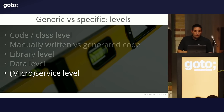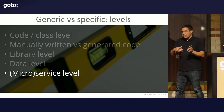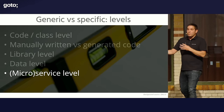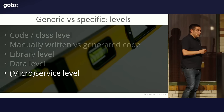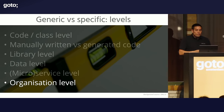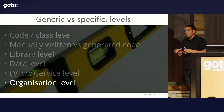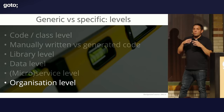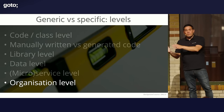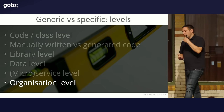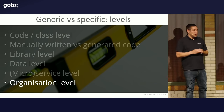You can make generic versus specific choices on the service level — are you going to put something in a generic service used by multiple teams, or keep it for yourself? And even on the organization level: when are you going to do something specific for your project, versus making a generic library or service that other teams can use? It may save them time, but you do introduce coupling between those teams and those projects.